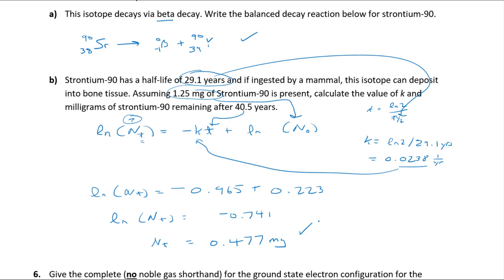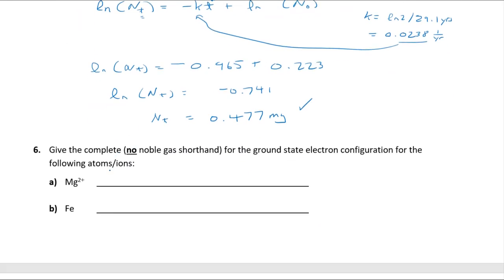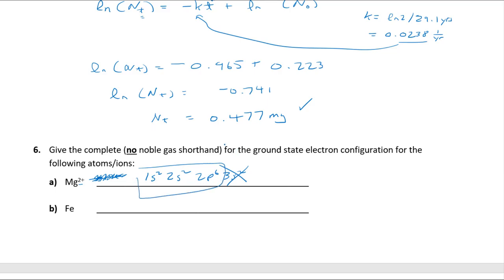Electron configurations: magnesium has 12 electrons, and Mg²⁺ removes two, leaving 10. The best approach is to write the neutral atom first: 1s² 2s² 2p⁶ 3s², then remove two electrons from the highest n value, which is 3s. What remains is 1s² 2s² 2p⁶ — the electron configuration for the cation. This method works for everything and you'll never miss it.